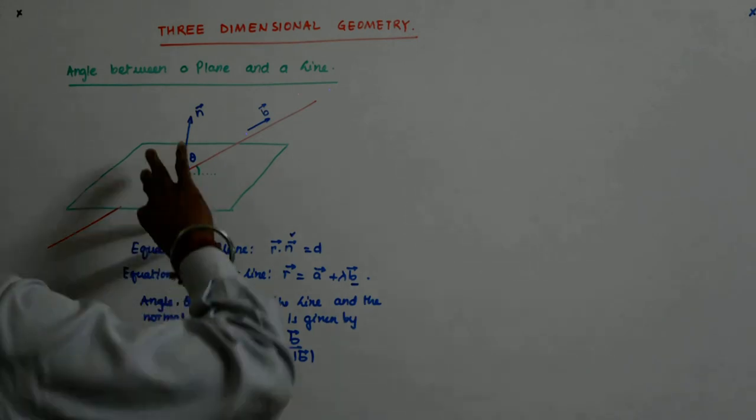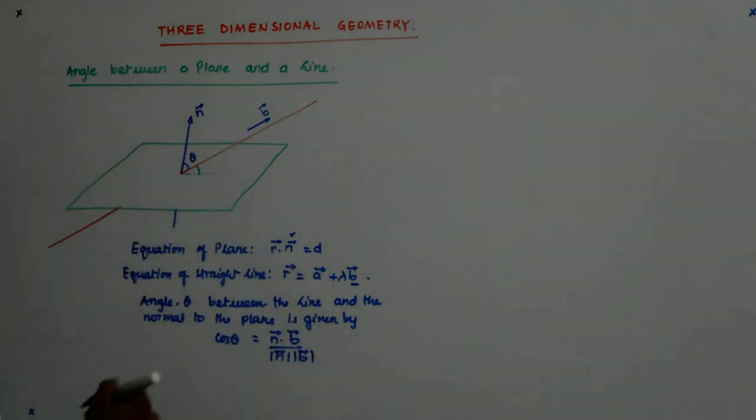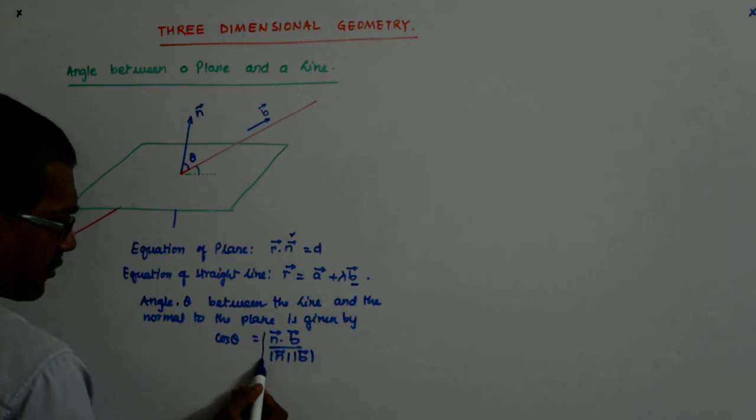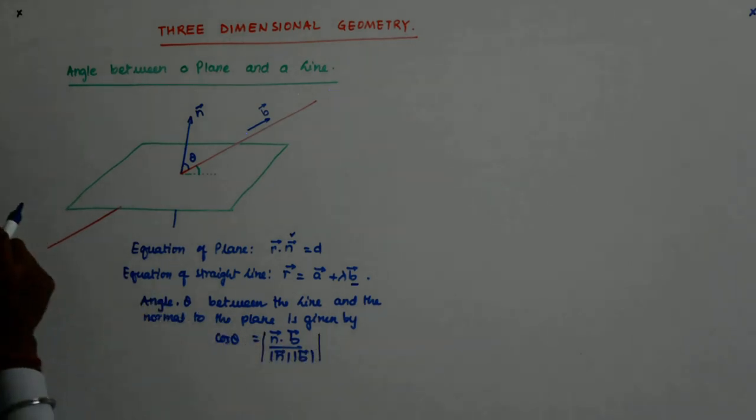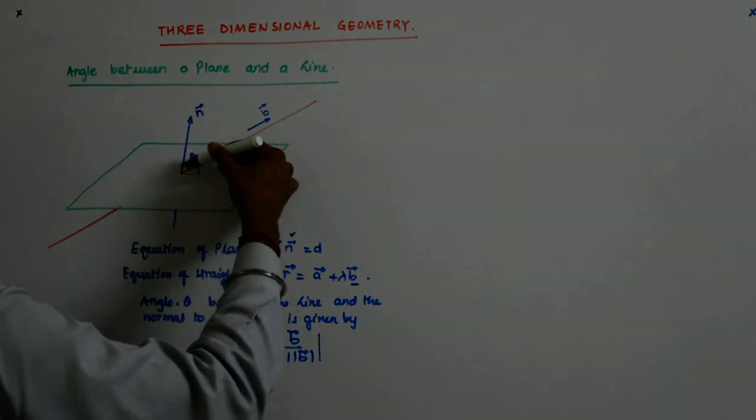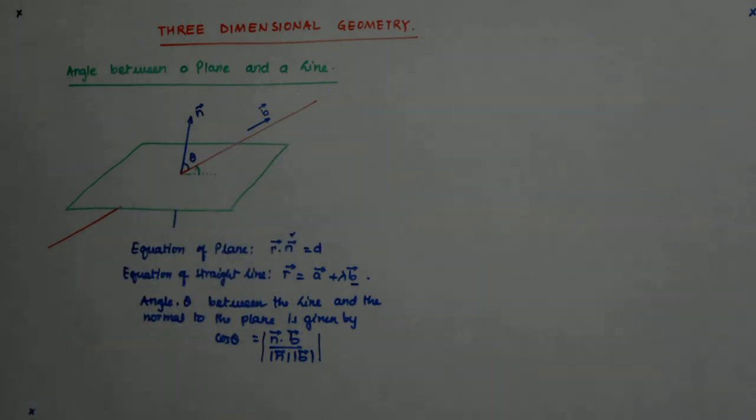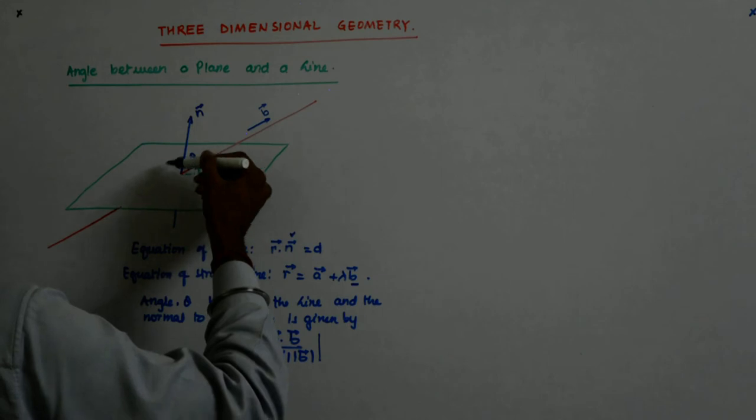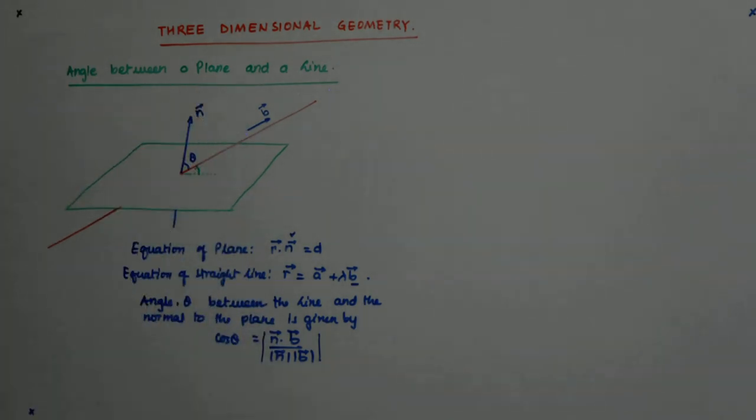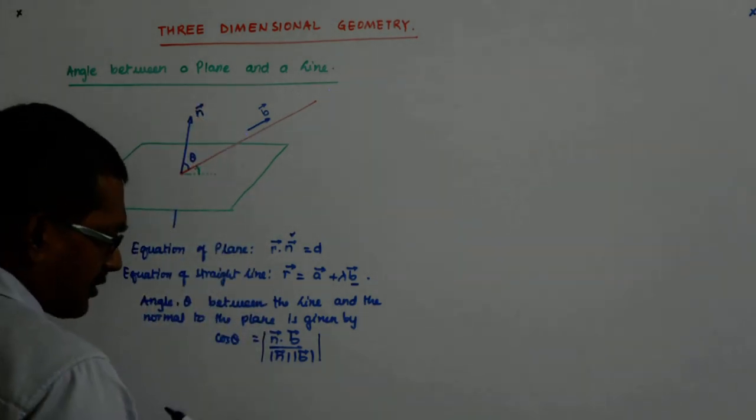And this angle will be acute. So, mod of that. Even if it is negative. Because one of these angles is this and another is that. So, I am satisfied with this. That is cos theta.